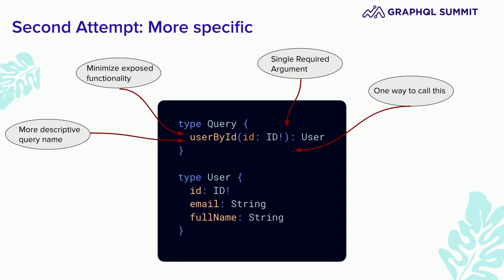This leaves just one way to call this. Before, we were exposing nine different permutations that we'd have to handle, but with this design, there's just one. Lastly, there's going to be less overall data exposed. Because we know the actual use case and what fields our clients want to select, this is the only thing we need to add. This can help specifically with schema evolution and maintaining an evolvable graph over time.